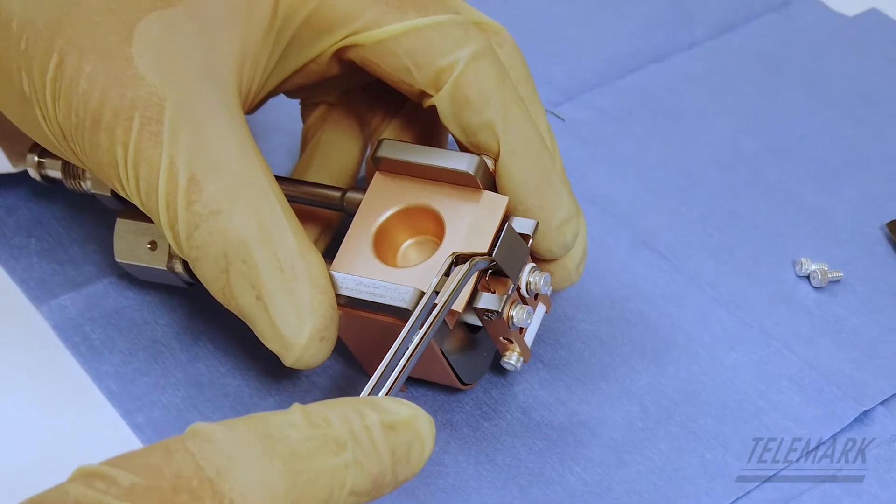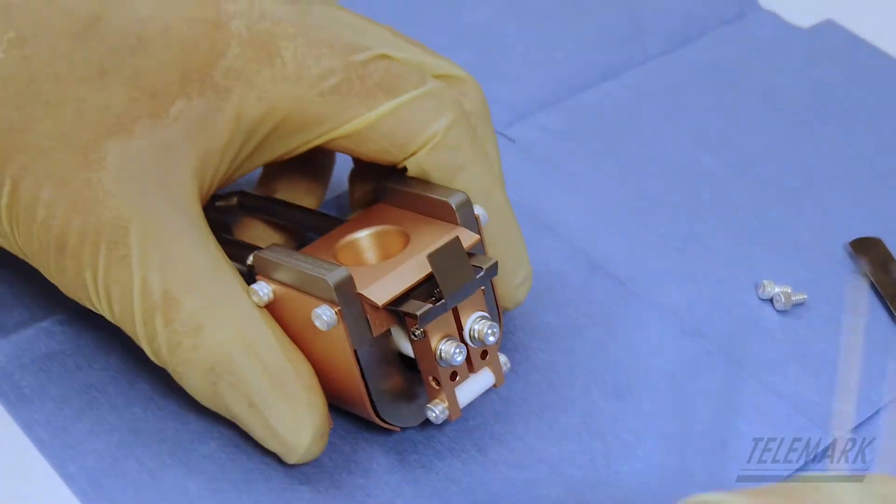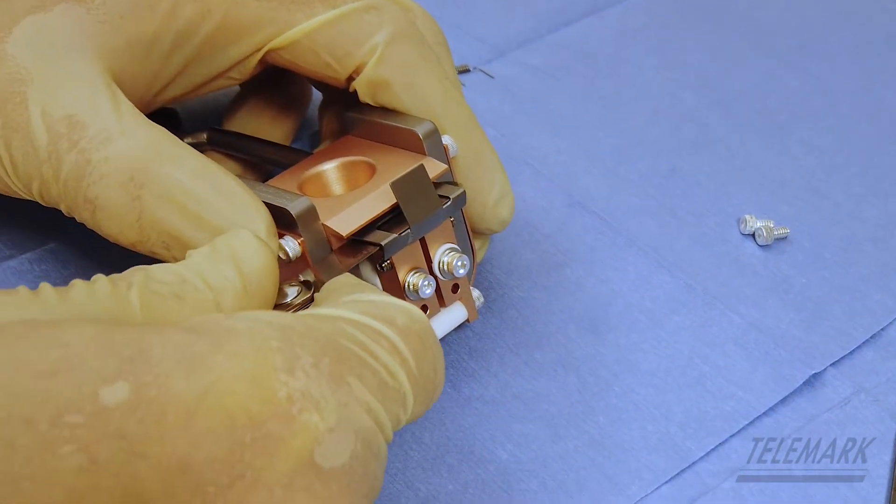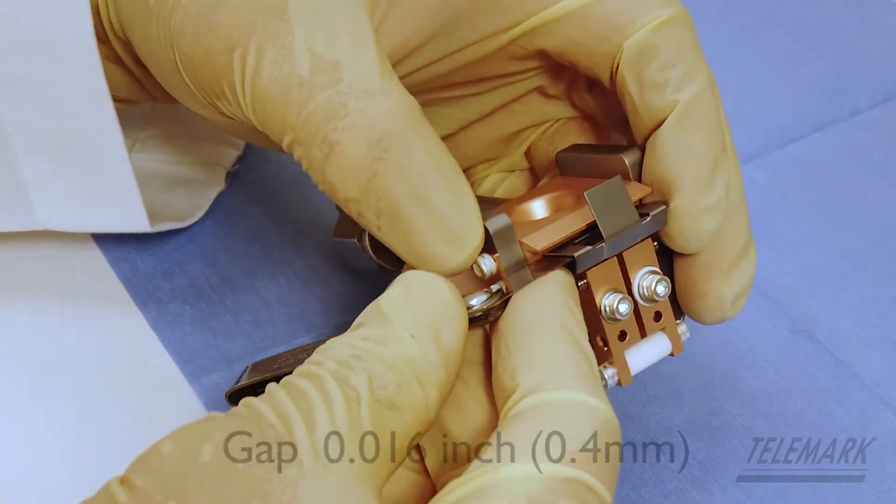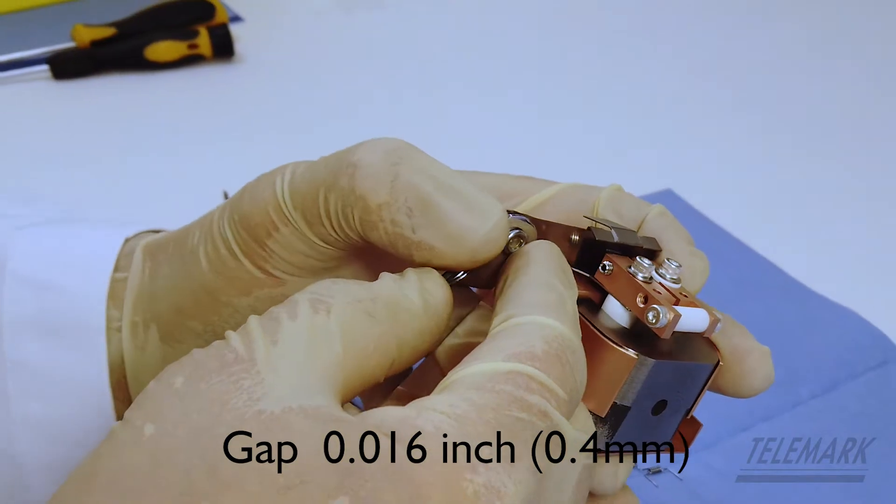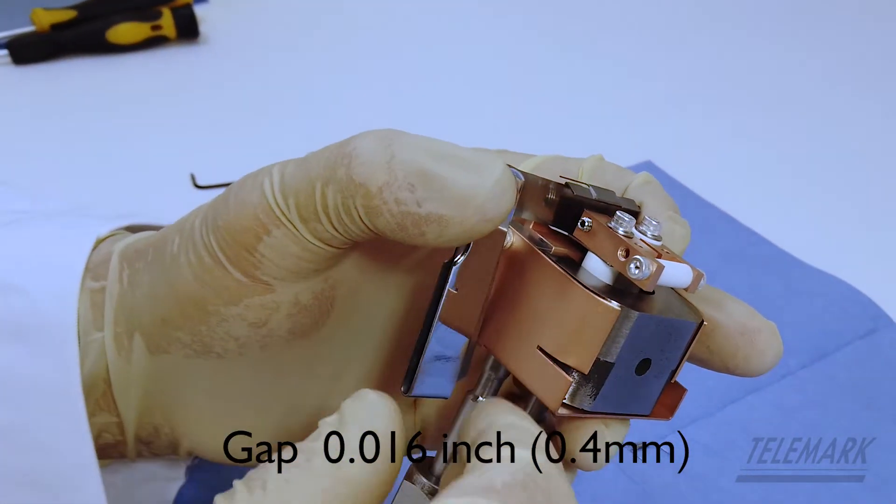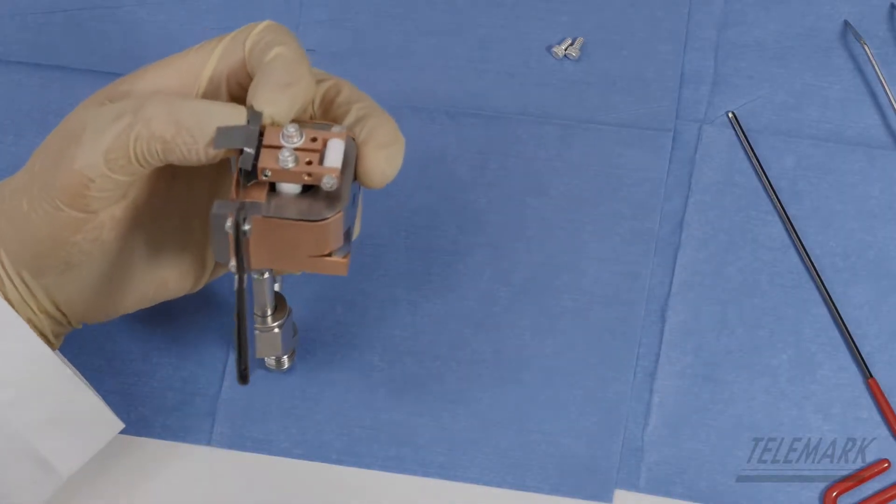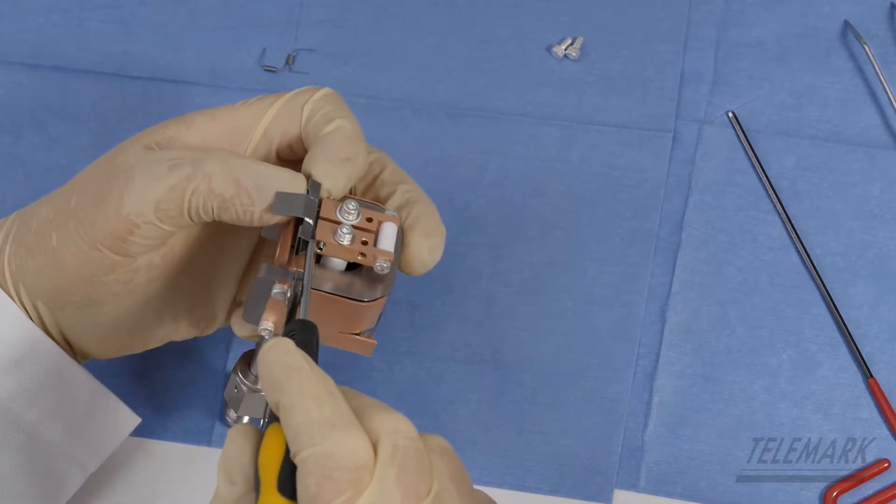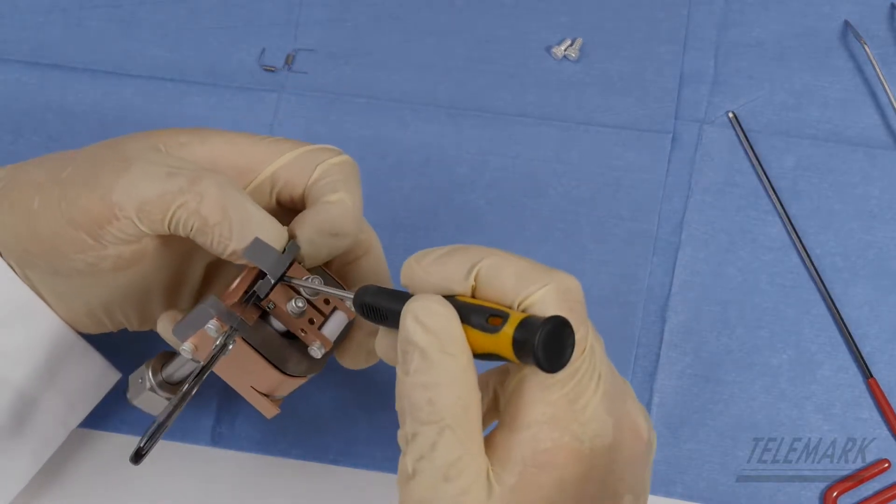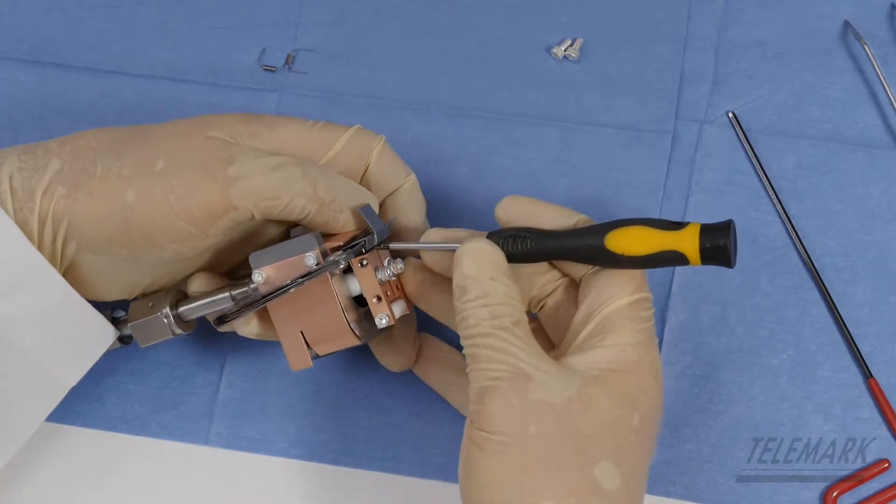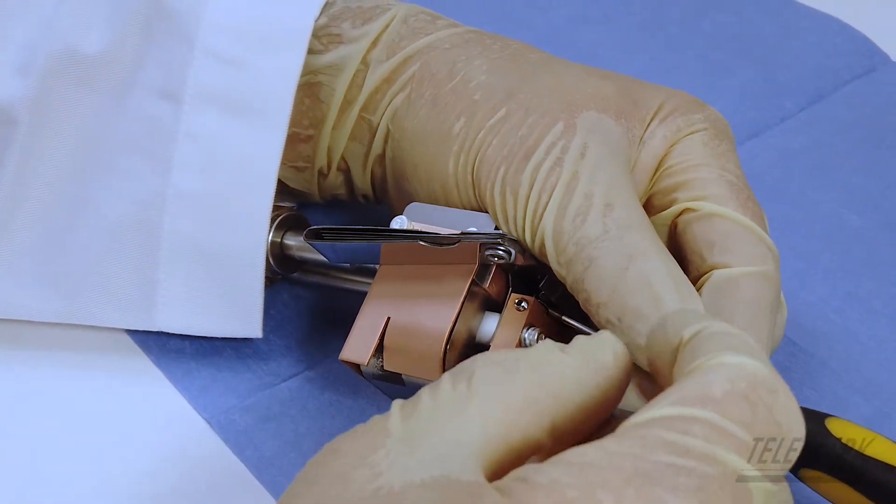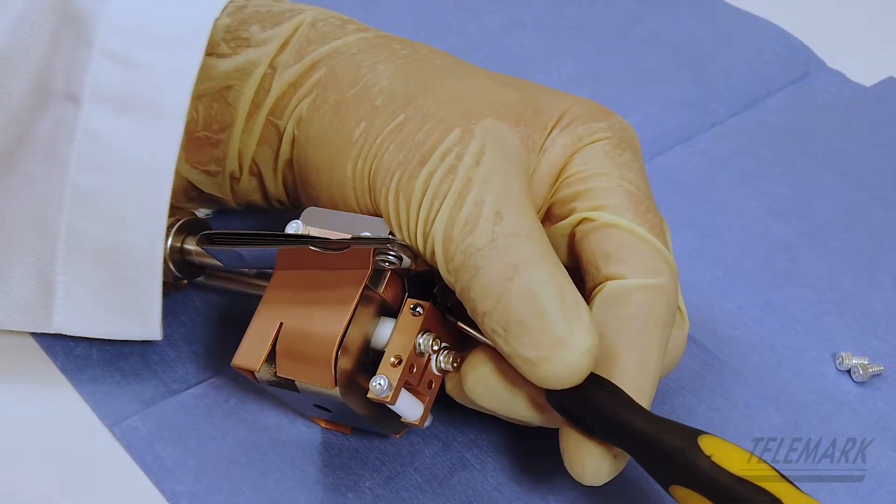Drop your filament down into its home down there. And you want to set your 16 thousandths feeler gauge. In this case a feeler gauge. I don't know what else anybody would use. Then I grab a little screwdriver. Press that filament up against the gauge.